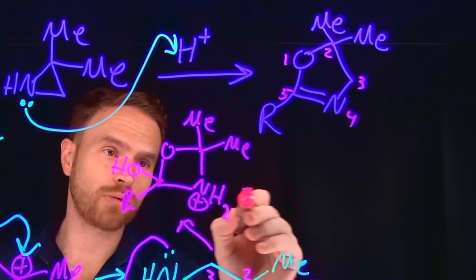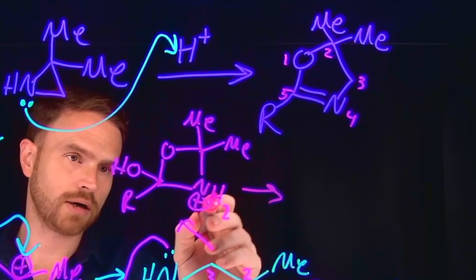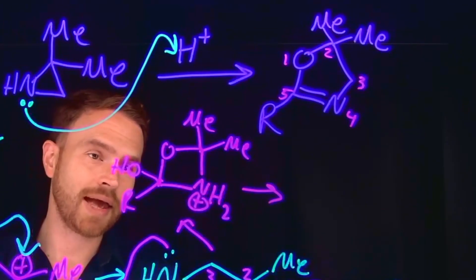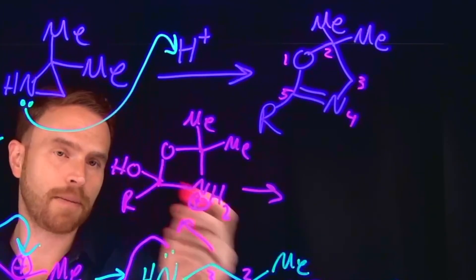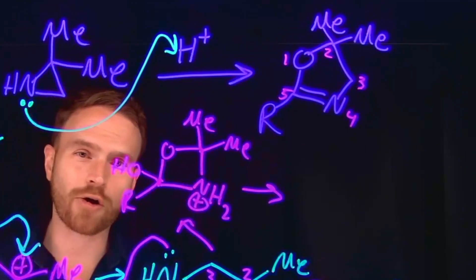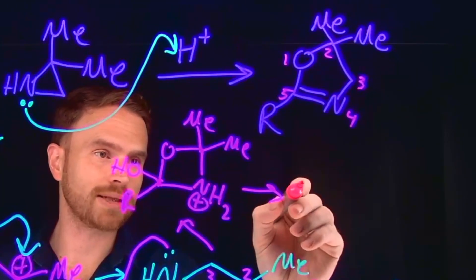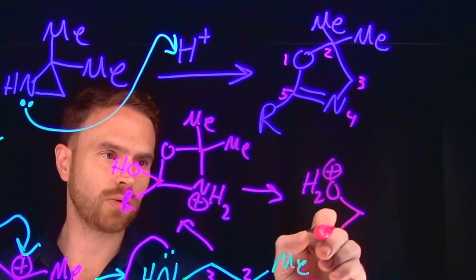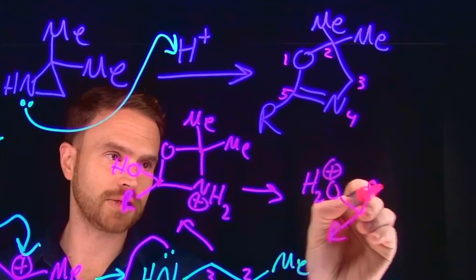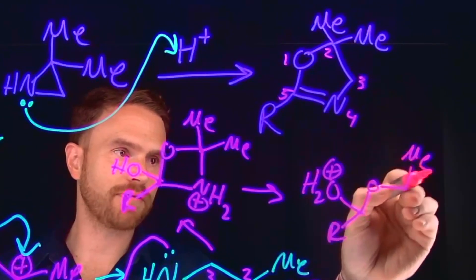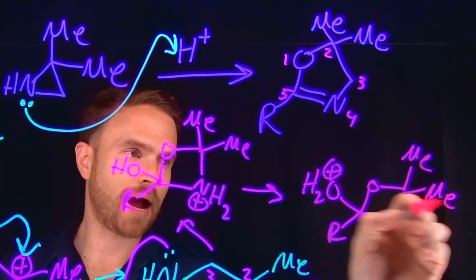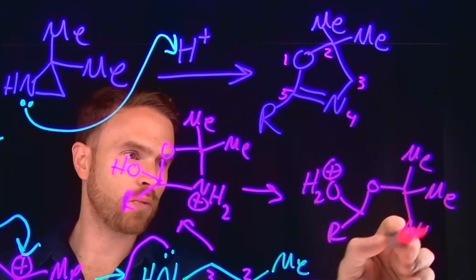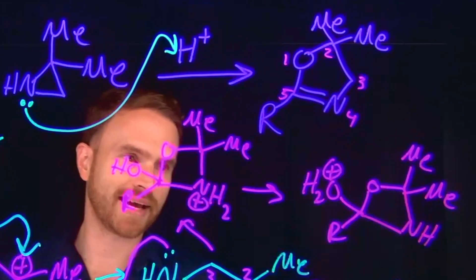And then from here, what can happen is a proton transfer, where one of the protons that is on this nitrogen gets removed. And instead, a proton gets transferred to this alcohol, which is going to make it a great leaving group. So we're going to end up with an alcohol that was protonated at this position, which is going to mean there are three bonds at that position. And because of that, that's going to make that highly susceptible to being removed as part of our next step.